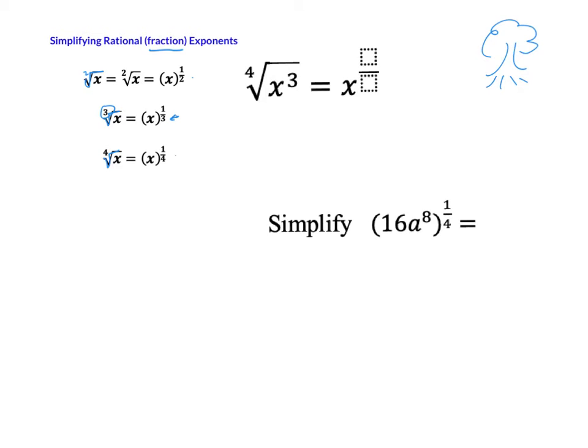You need to remember what an exponent means. Remember, if you have x to the 3rd, that means you have 3 x's that you're multiplying together. So when you have a fraction, it means you don't even want a whole. You want 1 out of the 2 roots. That's how this looks.